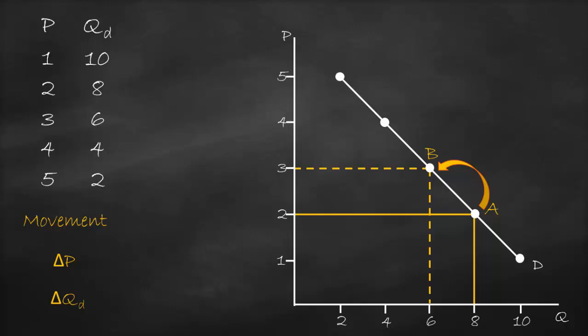Let's assume the government imposes a tax on chocolate because too much sugar is unhealthy — for example, in the UK we have a sugar tax. This means we will have a lower quantity demanded at each price. At a price of 1, quantity demanded is 8; at price 2, it's 6; at price 3, it's 4; at price 4, it's 2; and at price 5, it's 0. Let's draw these new points and connect them to get a new demand curve.